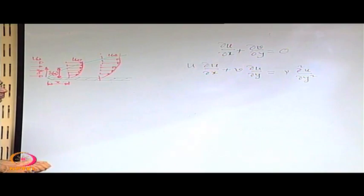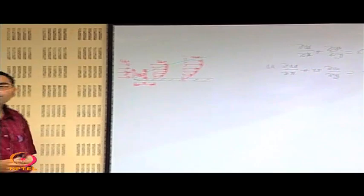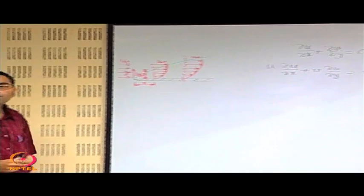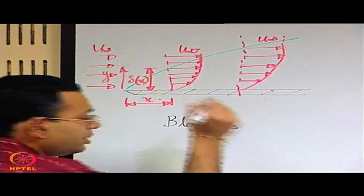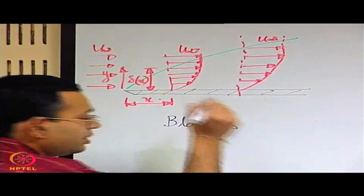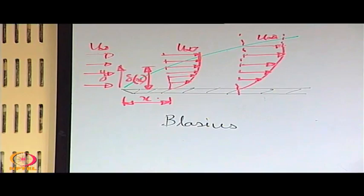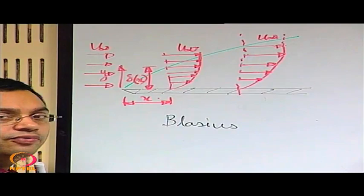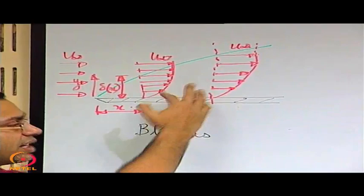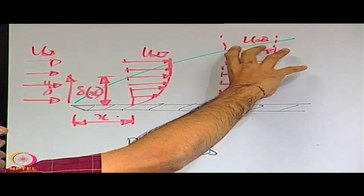Let us look at the qualitative way in which historically this phenomenon was understood. A lot of effort was given by a famous scientist, engineer, and mathematician known as Blasius. He observed one important behavior: if you look at the velocity profiles, these velocity profiles are not the same. As you go along x, the velocity profiles change, but each profile looks as if it is a stretched version of what it was at an x before that.